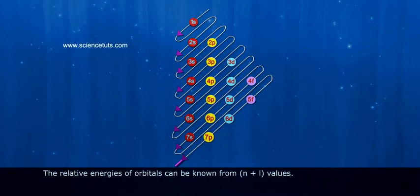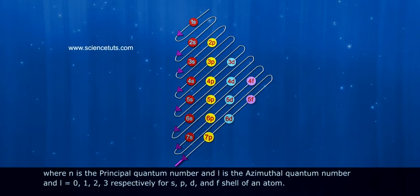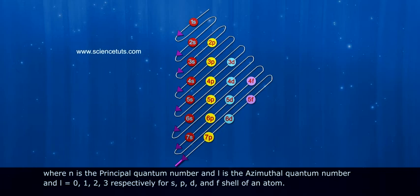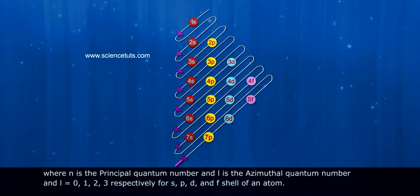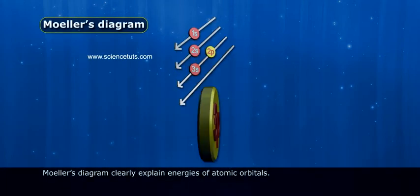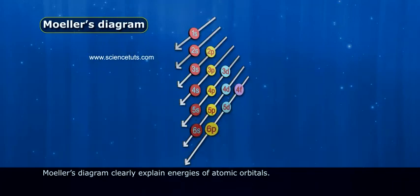The relative energies of orbitals can be known from n plus l values, where n is the principal quantum number and l is the azimuthal quantum number. l is equal to 0, 1, 2, and 3 respectively for S, P, D, and F shells of an atom. The Moeller diagram clearly explains the energy of atomic orbitals.